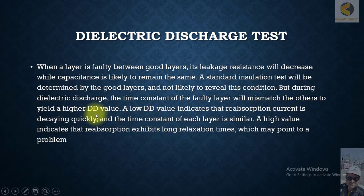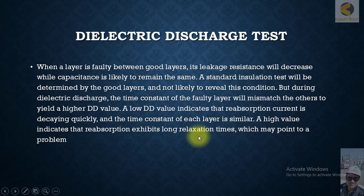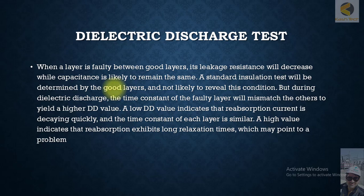A standard insulation test will be determined by the good layers and is not likely to reveal a faulty condition. But during dielectric discharge, the time constant of the fault layer will mismatch the others to yield a higher dielectric discharge value. A low DDD value indicates that the absorption current is decaying quickly and the time constant of each layer is similar. A higher value indicates that reabsorption exhibits long relaxation times, which may point to a problem. If one or two layers are defective, you will see a different pattern, and you can find out that the insulation is defective — but normal insulation testing could not find this issue.